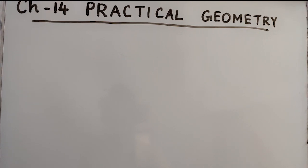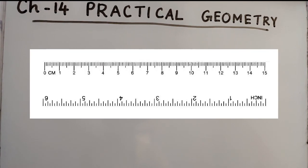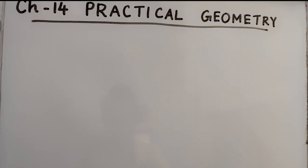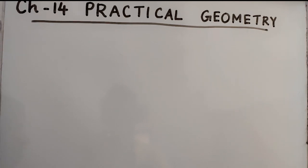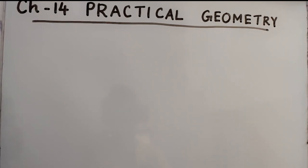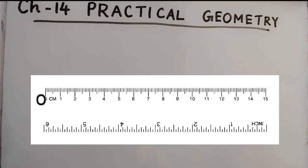We use a ruler to draw a line segment. A line segment has two end points and a length. So if the measurement is given, how do we draw a line segment? That is an easy method.